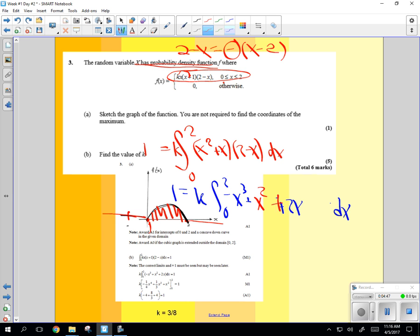2x squared minus x squared will be plus x squared. Right? Okay? So now integrate that.